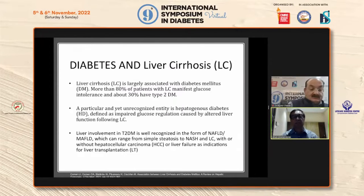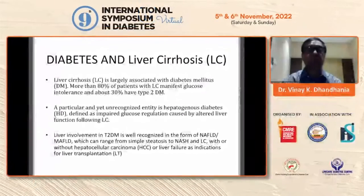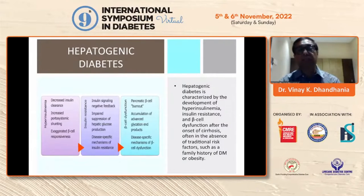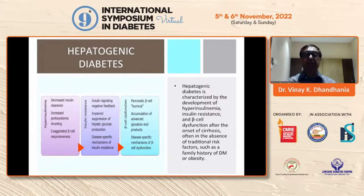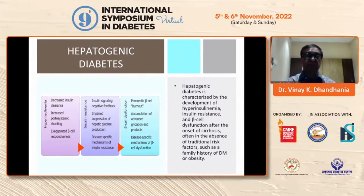Cirrhosis is largely associated with diabetes — almost 80 to 90% of patients have diabetes mellitus or some form of glucose intolerance. There could be something called hepatogenic diabetes, which is characterized by development of hyperinsulinemia, insulin resistance, and beta cell dysfunction, all three leading to glucose intolerance and diabetes in patients who are basically having chronic liver disease but are non-diabetic.